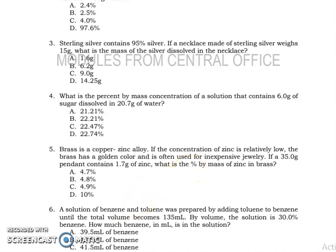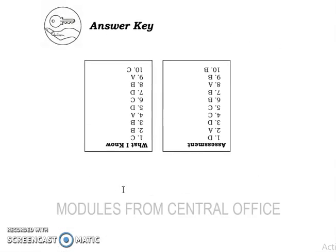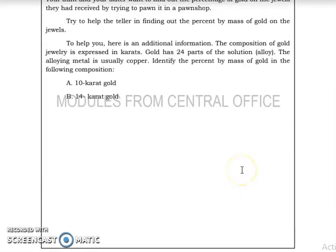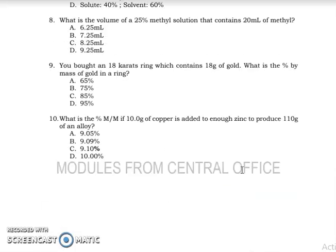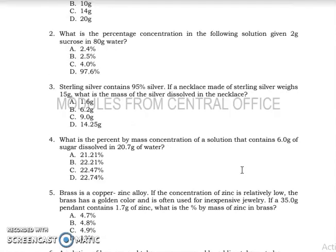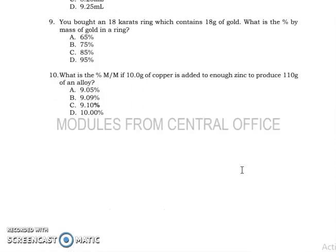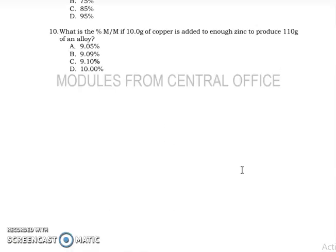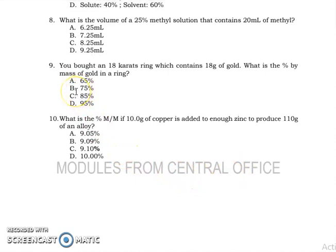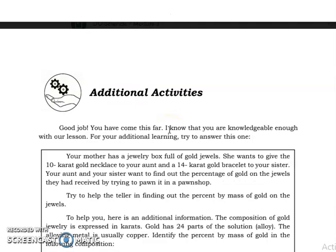For the assessment part, just refer your answers here. The answers are just here. For the explanation of each number, I know you can already explain the answers. Why is it? For example, number 9, the answer is letter B. You just use the formula. 18 carats, which means 18 grams of gold, so that's 18 divided by 24 times 100, and you'll get 75%.